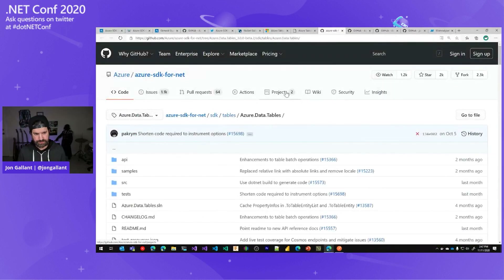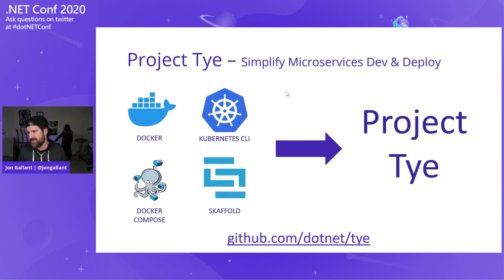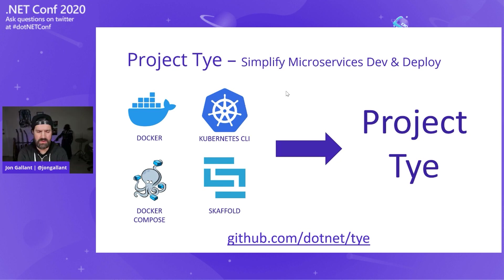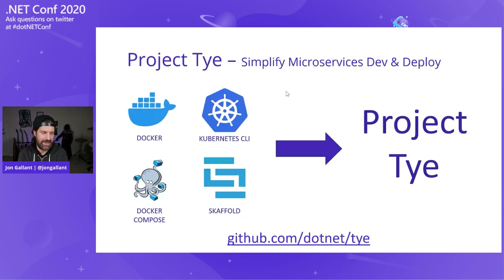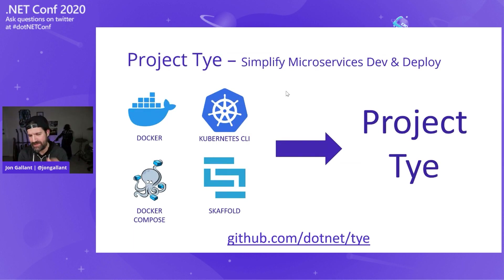The next big thing we're going to talk about is Project TIE. As I was bringing my app to Kubernetes, I discovered that inner loop Kubernetes development is very difficult in the current state. There are so many tools and so many YAMLs — the cognitive overload is crazy. There are so many things you have to do when you want to take an application from local to containers to Docker Compose to Azure Kubernetes Service. Someone pointed me to Project TIE, and I'll tell you — I love it. It's absolutely a lifesaver, and I'm going to show you how.